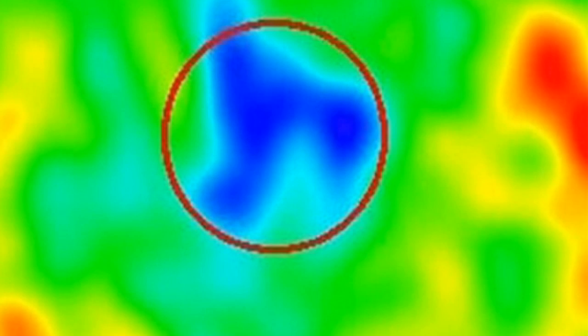The cold spot was first discovered by astronomers in 2004, when they were examining a map of the radiation left over from the Big Bang. They were puzzled by what was causing it.